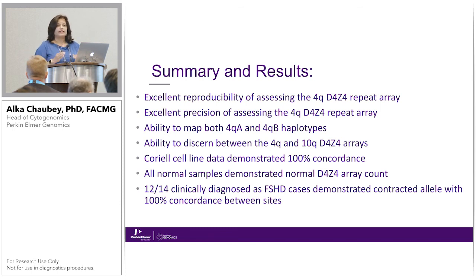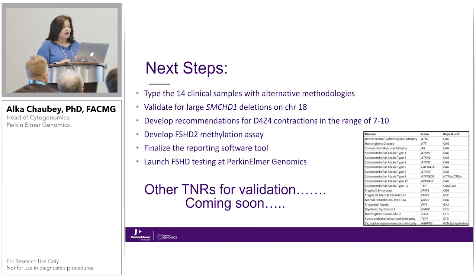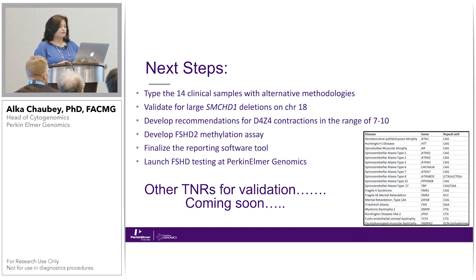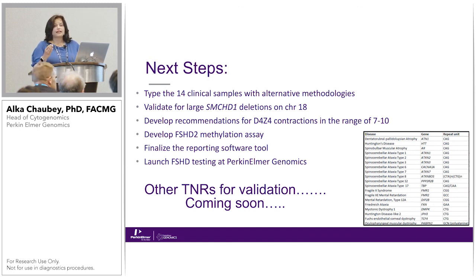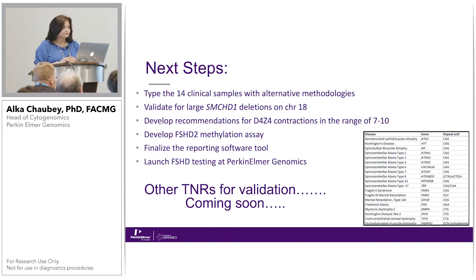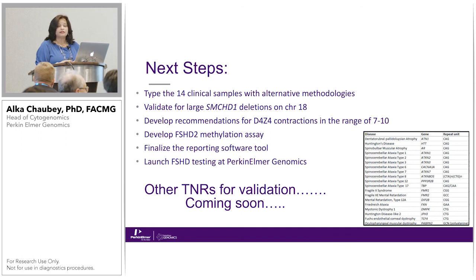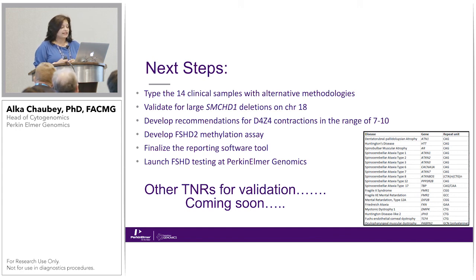We had concordance between two different sites, two different instruments, and two different operators using the same approach. Our next steps include using alternative conventional methodologies to confirm our platform findings, validating for large SMCHD1 deletions — we've seen three cases of either entire chromosome 18p arm deletions or larger 18p deletions in our LGMD panel — and developing the FSHD2 methylation assay on BioNano, especially for the 7 to 10 repeat range where hypomethylation is critically important. We are also finalizing the reporting software tool with Mark's team to launch FSHD testing at Perkin-Elmer Genomics.